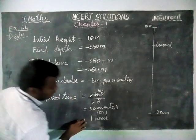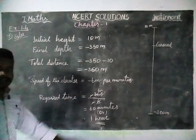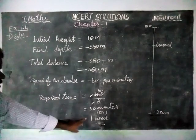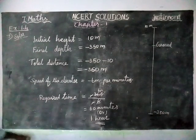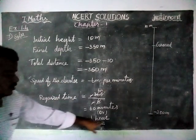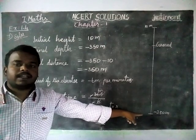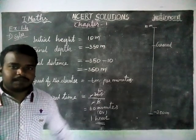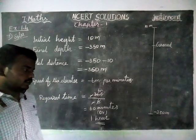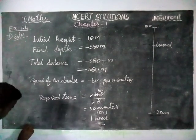This is 60 minutes, or we can write it as 1 hour, because 60 minutes equals 1 hour. Therefore, the elevator takes 1 hour to reach minus 350 meters depth.